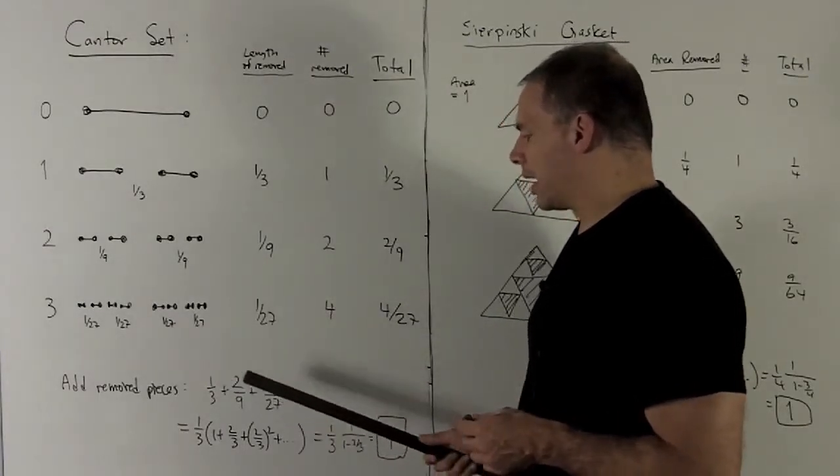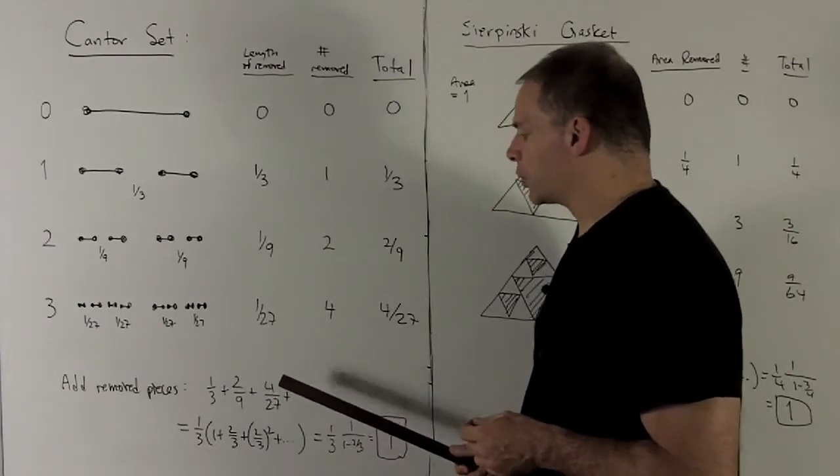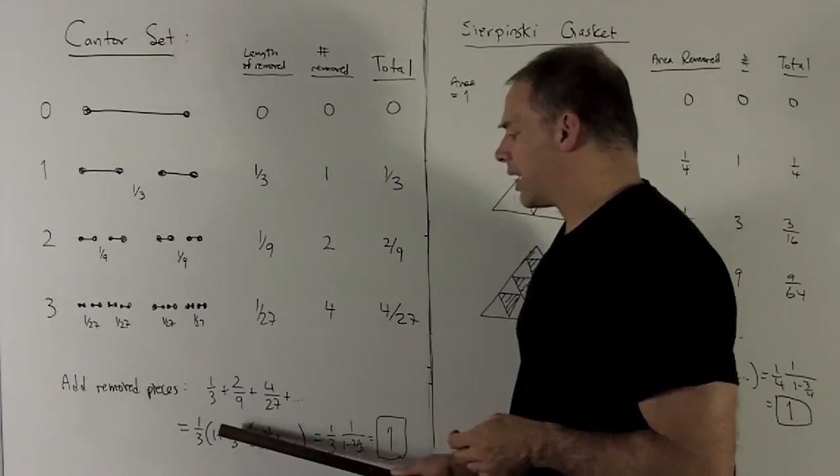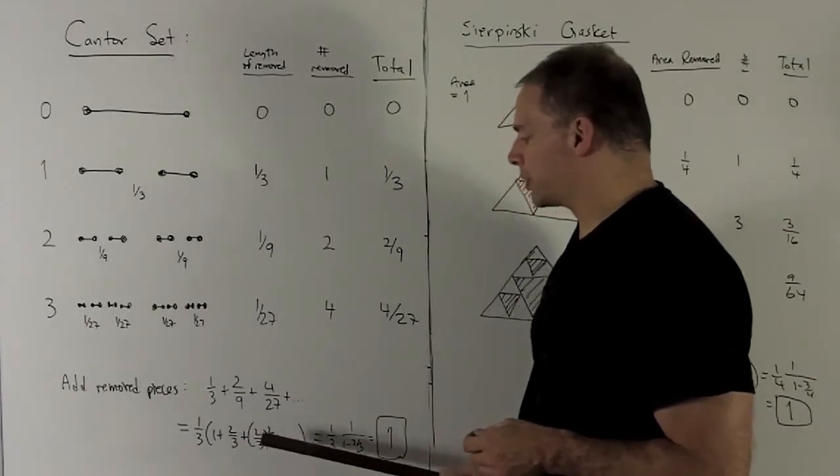So let's take a look at the sum of the lengths of the segments that I've removed. I have one third plus two ninths plus four twenty-sevenths and so on. The a is going to be one third, and then what's left over is going to be one plus two thirds plus two thirds squared plus two thirds cubed and so on.